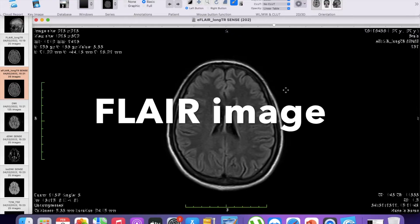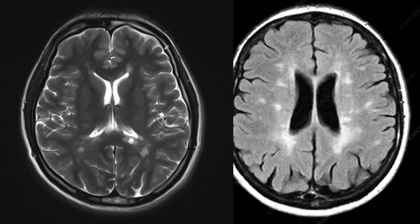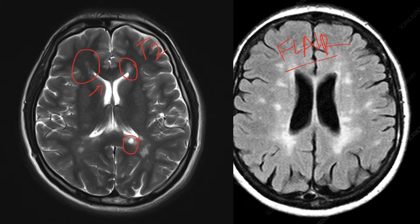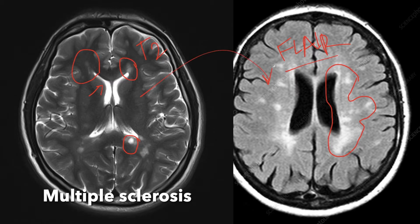This is a FLAIR image. We can see in this case it is very difficult to evaluate the lesions around the ventricles in the T2 weighted image because they are masked by the high signal from the ventricles. But in this FLAIR image, we can see that the lesions around the ventricles are easily visualized because the high signal in the ventricles is suppressed. This is a case of multiple sclerosis and for this kind of diagnosis, we need a FLAIR image.